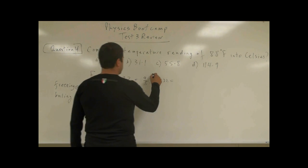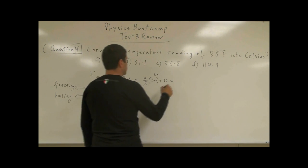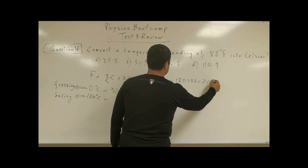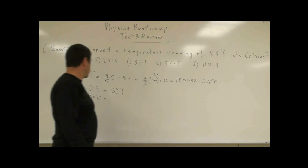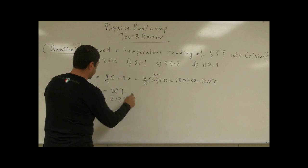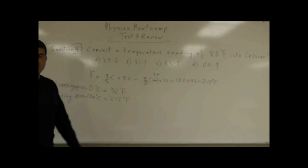Five goes into 120, 20 times 9, 180, plus 32, 212. So 100 Celsius corresponds to 212 degrees Fahrenheit. So that's basically the Fahrenheit scale.